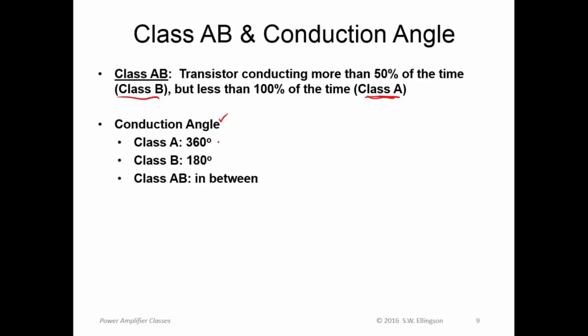So conduction angle simply refers to the fraction of time expressed as a number of degrees between 0 and 360 that the transistor is conducting. So for class A, we say the conduction angle is 360 degrees, because there is no time when it's not conducting. For class B, we're conducting half the time over one half period of a sinusoid, so we say it's 180 degrees. And then of course class AB is somewhere between 180 and 360 degrees, and really any value in that range is considered class AB. And all the other classes of power amplifiers can also be assigned a conduction angle based on this idea.